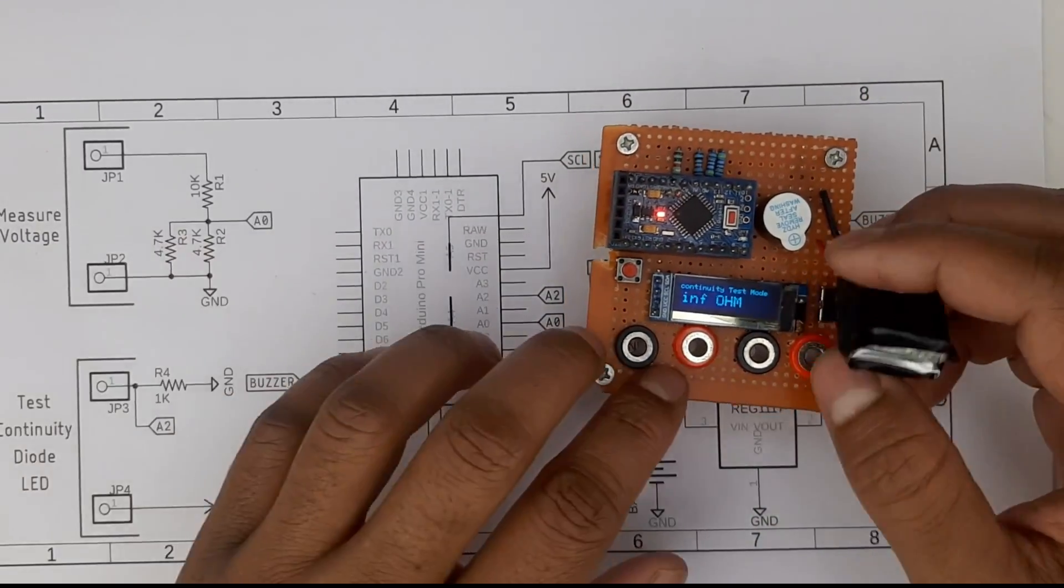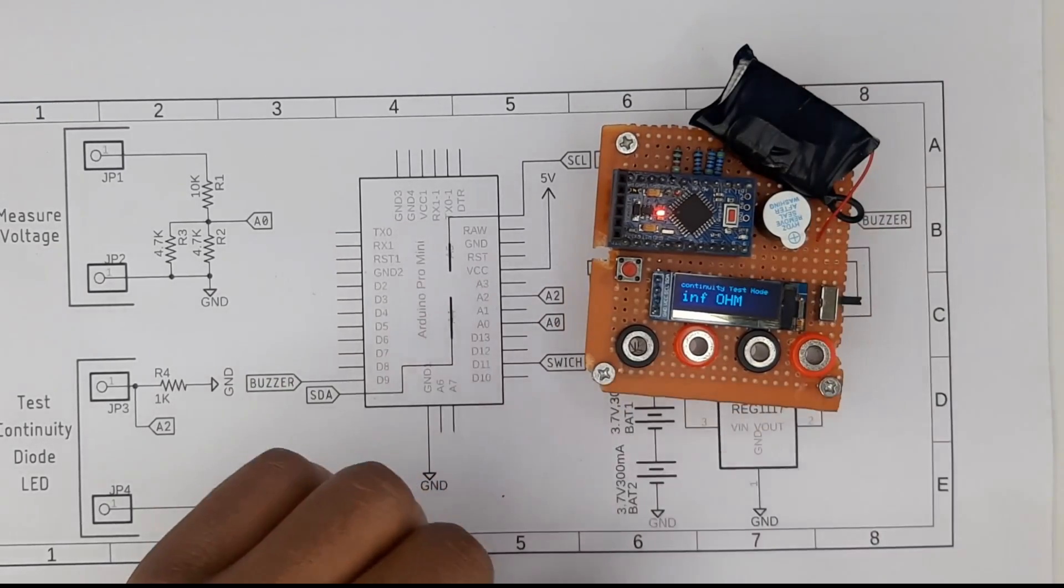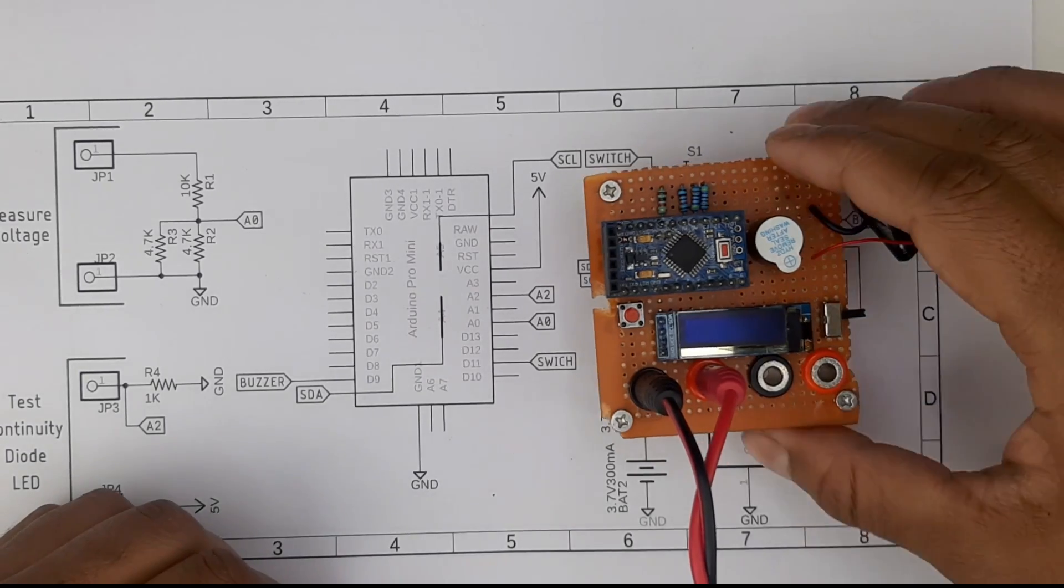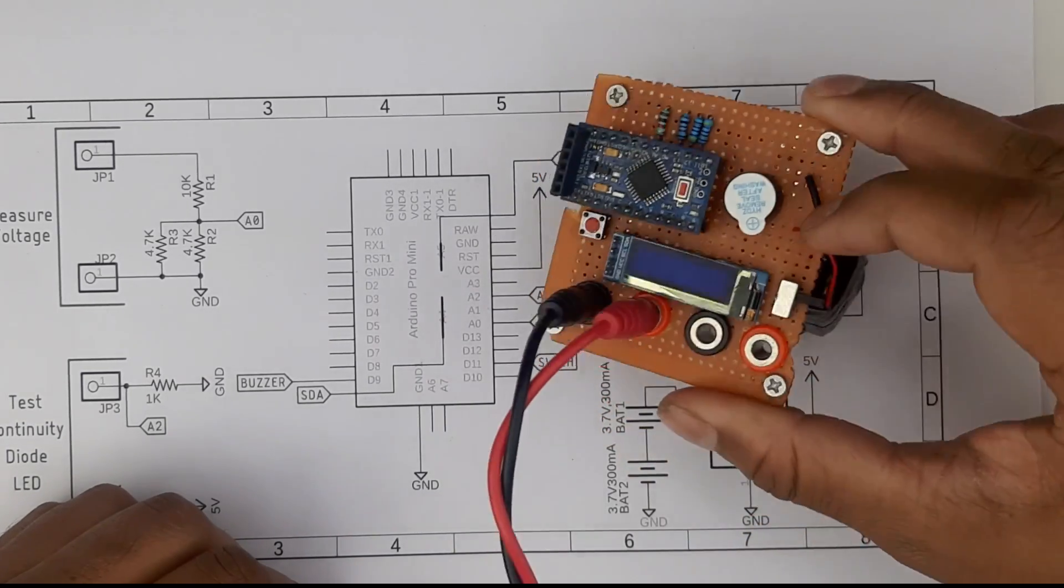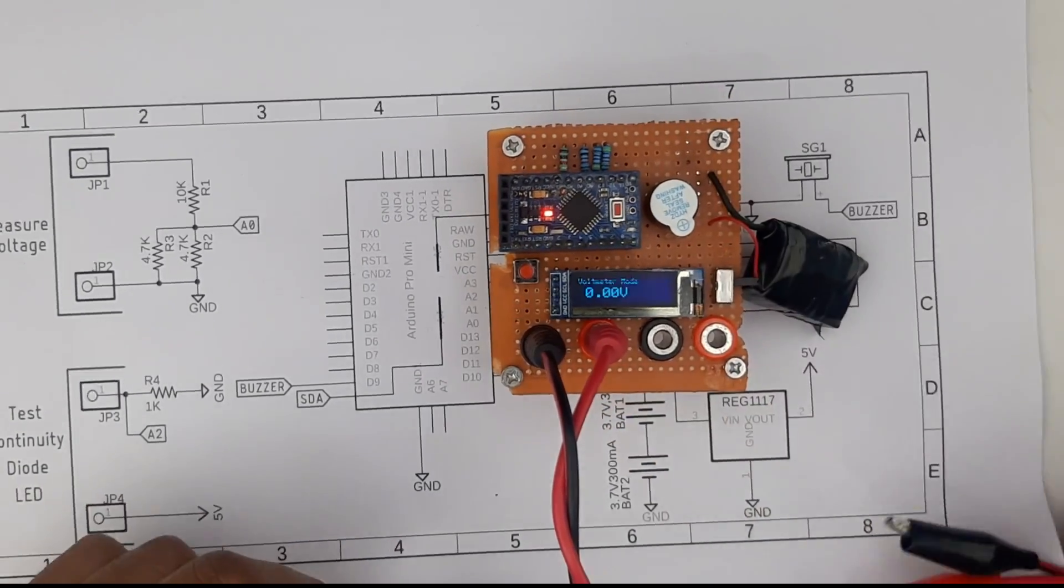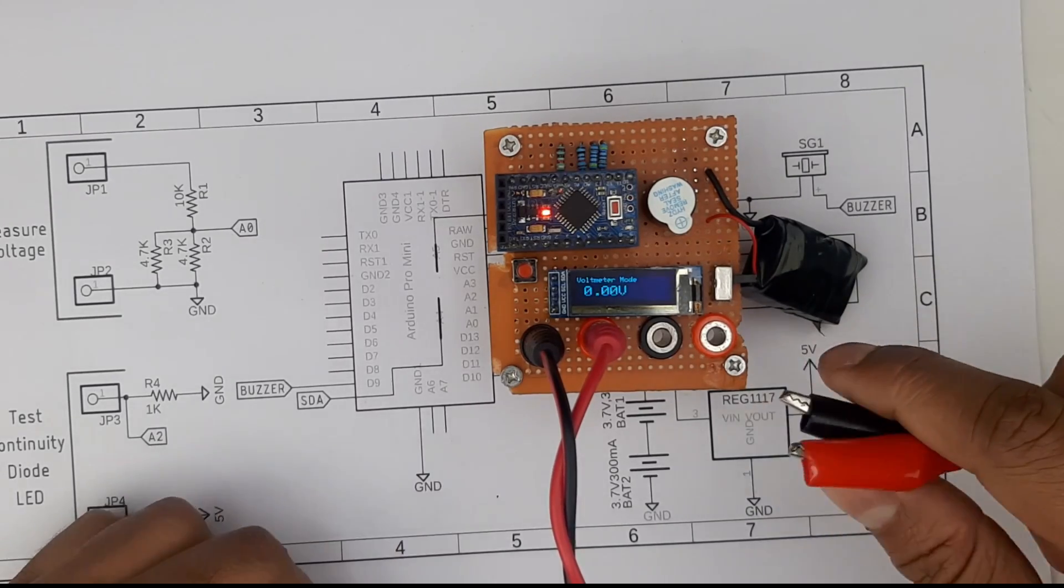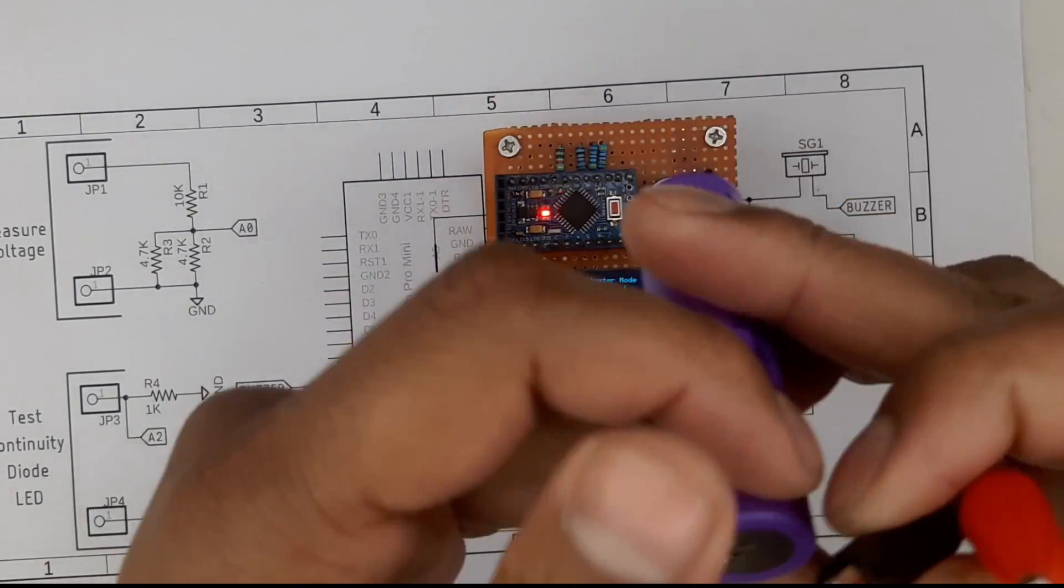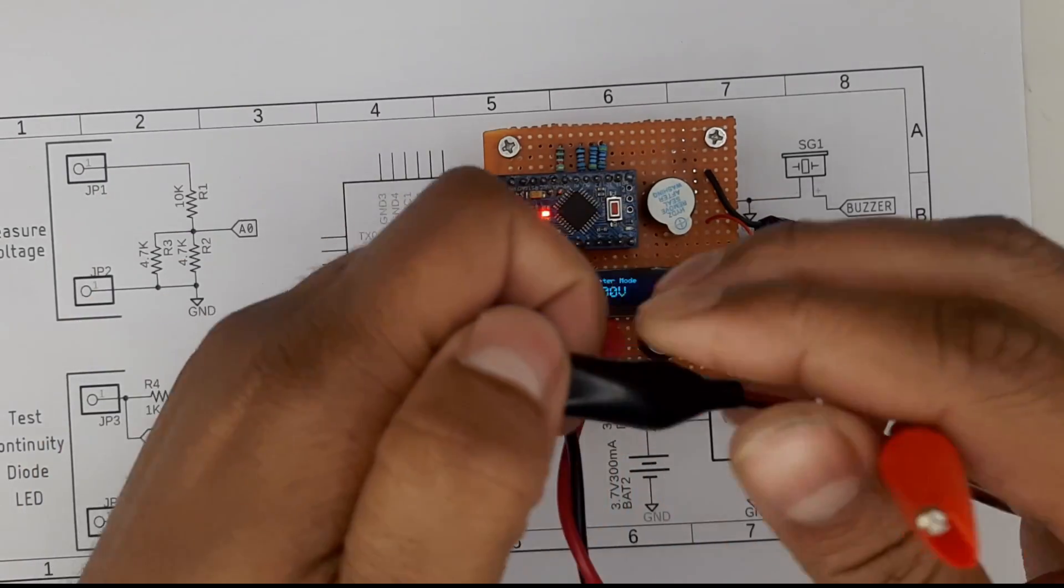Now as you can see I have connected two banana alligator clips with this board. It's right here and it's in voltmeter mode. If I connect a battery in this meter...